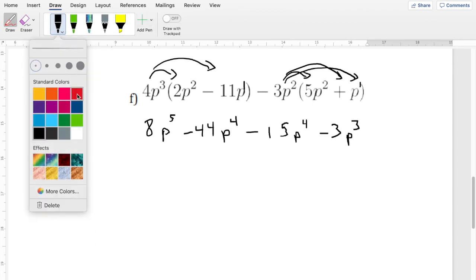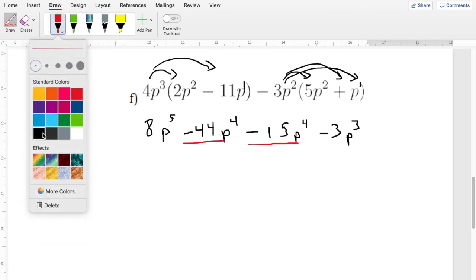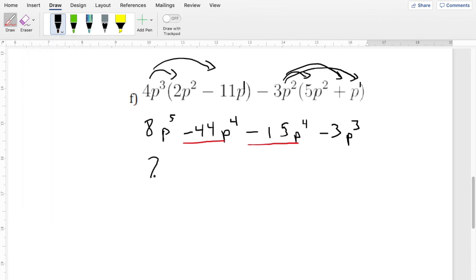I always like going from my highest exponent to my lowest exponent. It just keeps me organized. So I'm going to write this one first. Which is 8p to the 5. Now we're going to combine these two here. So that's going to be minus 59 p to the 4. And we have this here, which is 3p cubed. And there.